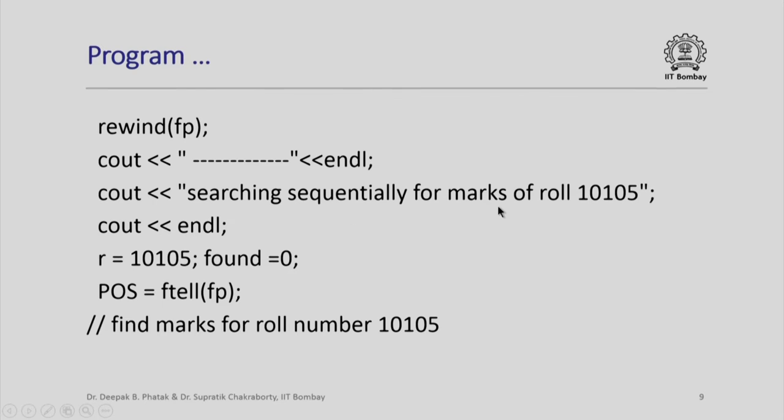Otherwise, I start with a variable found equal to 0 and count equal to 0. Notice what do I do? I first rewind fp. Now, I am searching sequentially for marks of roll number 10105. I set r equal to 10105, set found to 0, and exactly like I would have searched in a sequential text file, I start looking at records one after another in the binary file. I also note the current file position by using ftell so that I can print it when I find the desired number.